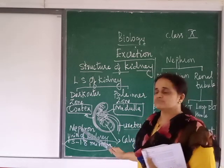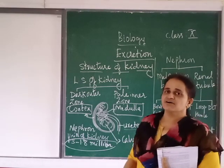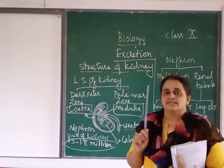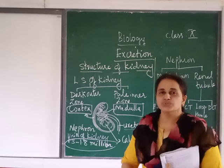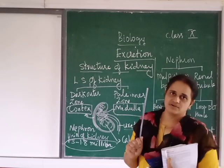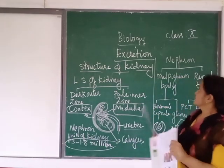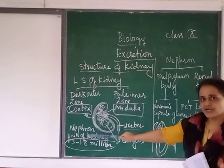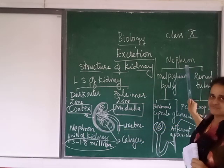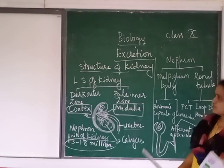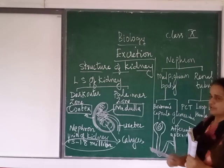You can write the answer for this objective: nephrons are the structural and functional units of the kidney, just as cells are the structural and functional units of life. So the nephron is the unit of the kidney. Structure of kidney is clear everyone? Now we will go to the structure of the nephron.